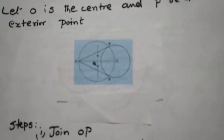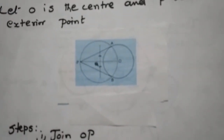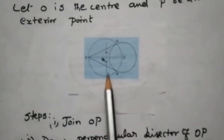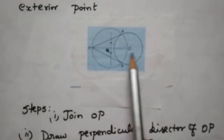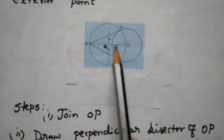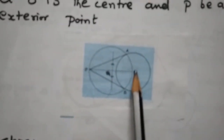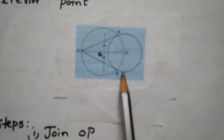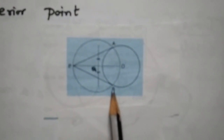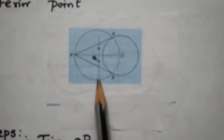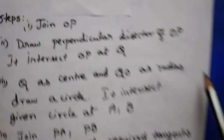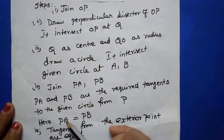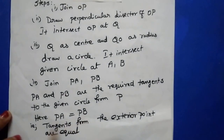To construct the perpendicular bisector: take more than half from O, draw an arc above and below, then from P draw another arc. Join the intersections — they intersect OP at Q. With Q as center and QO as radius, draw another circle. It touches the given circle at A and B. Join PA and PB — these are the two tangents from the exterior point to the circle.